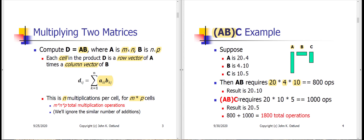To illustrate, let's suppose that A is 20 rows by 4 columns, B is 4 rows by 10 columns, and C is 10 rows by 5 columns. If we compute this from left to right — A times B first — that requires 20 times 4 times 10 equals 800 multiplications. Then multiplying that 20×10 result by C requires 20 times 10 times 5 equals 1000 more. So all told, multiplying A×B then times C requires 1800 multiplies.